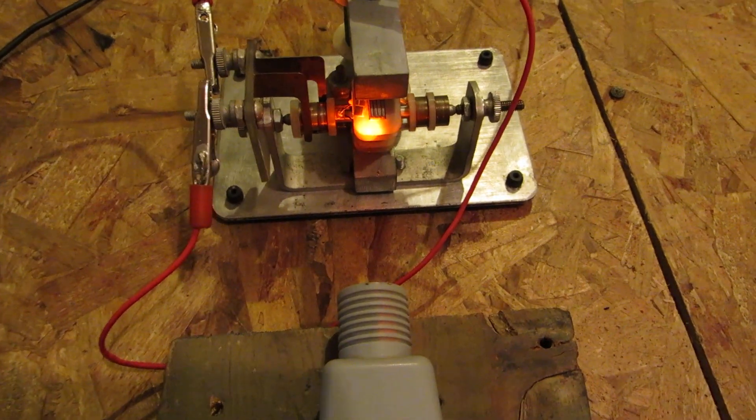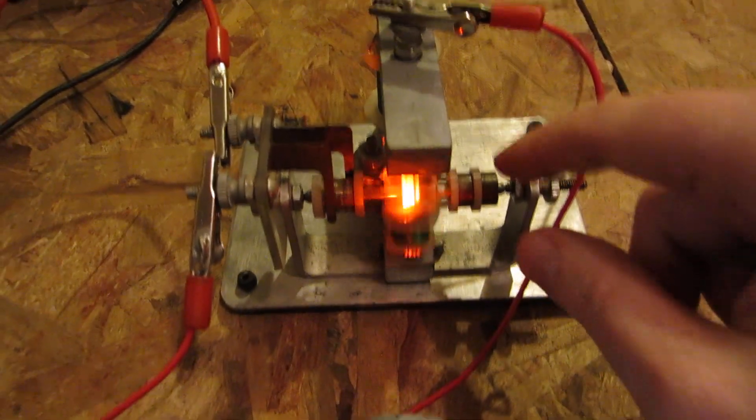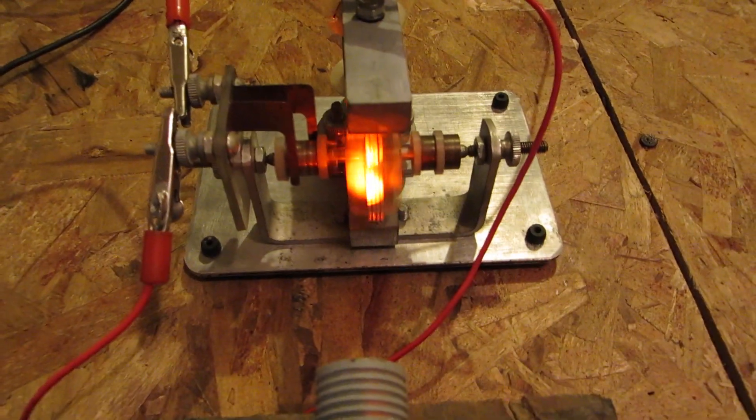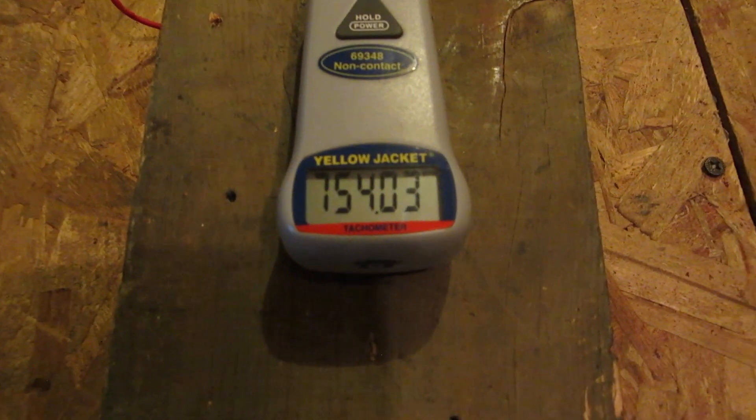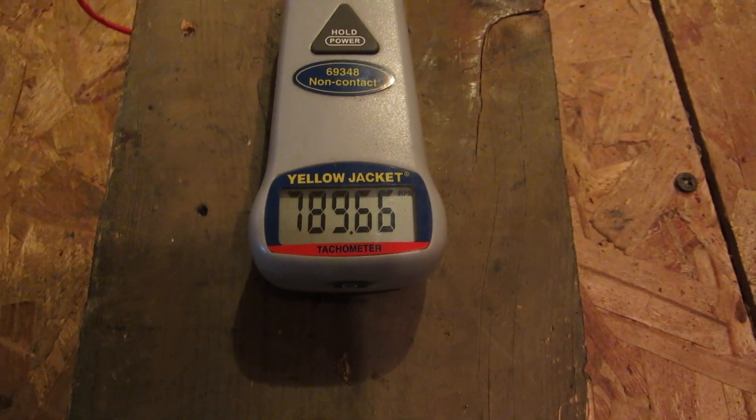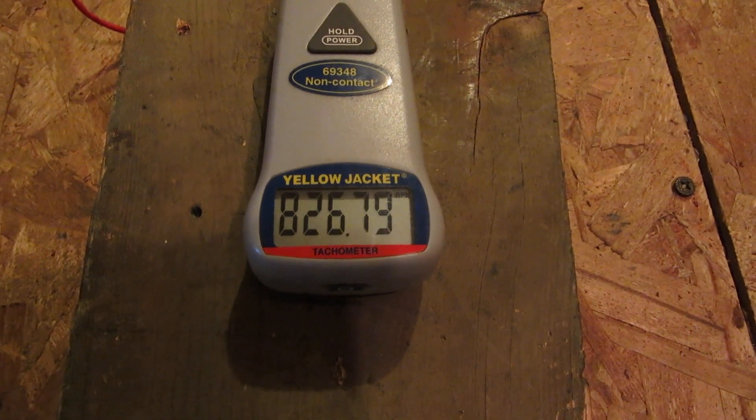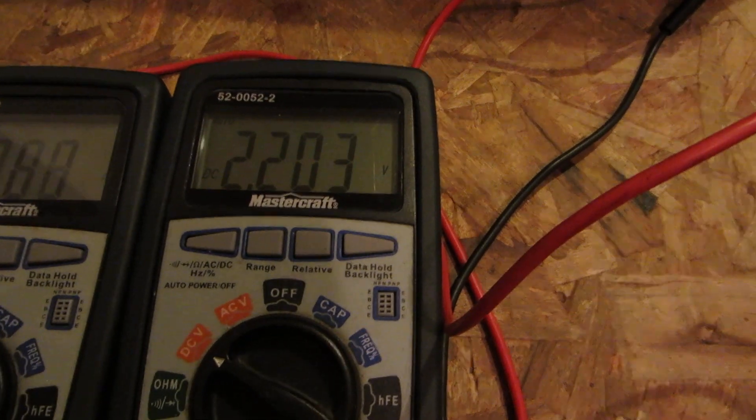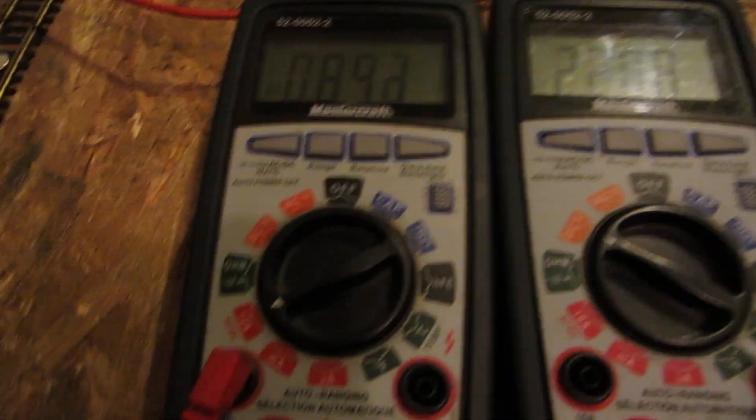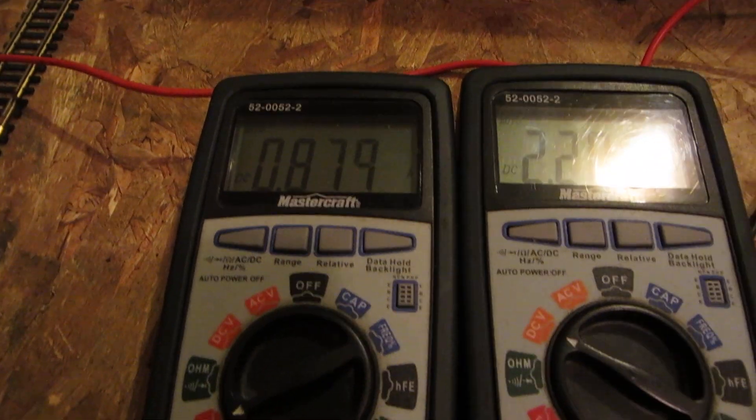So you see right about there at 4 volts, and we have rotation. 770, 780, 811, about 20 RPMs. Volts have dropped a little bit, but it's drawing 0.8 amps.